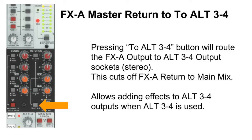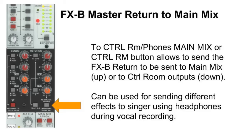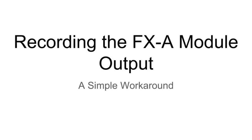Pressing the Alt-3-4 button routes the FX-A module's output to the Alternate 3-4 output sockets as a stereo signal, and this cuts off the FX-A return to the main mix — so effects can be applied to those outputs. All of these options can be used simultaneously; you can send FX-A into FX-B as well as Alternate 3 and 4. For FX-B master return, there is one option: you can select whether it goes to the main mix or to the control room, which is useful for sending different effects to a vocalist using headphones during vocal recording in the studio.